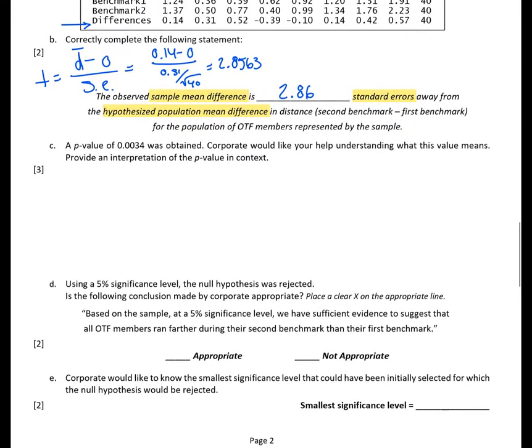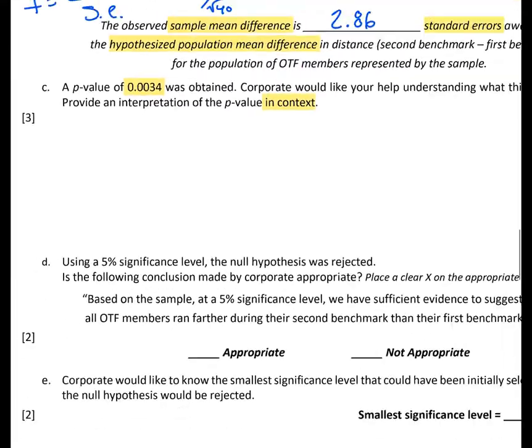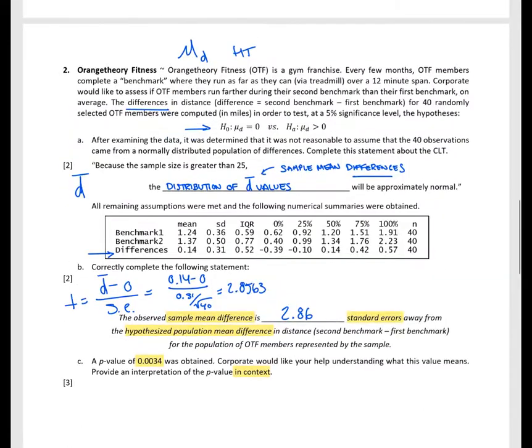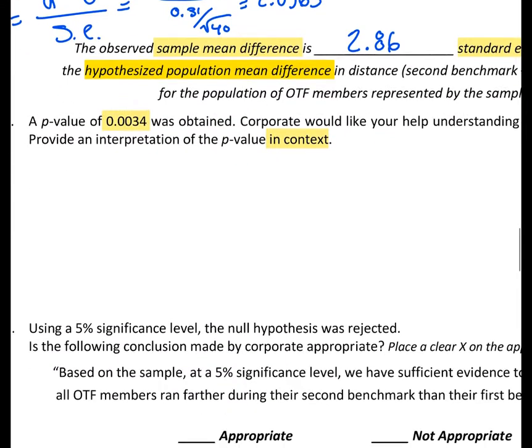Moving on to part C, they give us a p-value of 0.0034. Corporate would like your help understanding what this value means. Provide an interpretation of the p-value in context. If we start out by just thinking about what that p-value interpretation is, we remember that assuming the null hypothesis is true, it is the probability of observing what we saw or something more extreme. Now we have to add context to that. When we go to write this, instead of just saying assuming the null is true, we're going to write out what the null hypothesis actually is in words. We know that it is the population mean difference is equal to zero, specifically the population mean difference in distance.